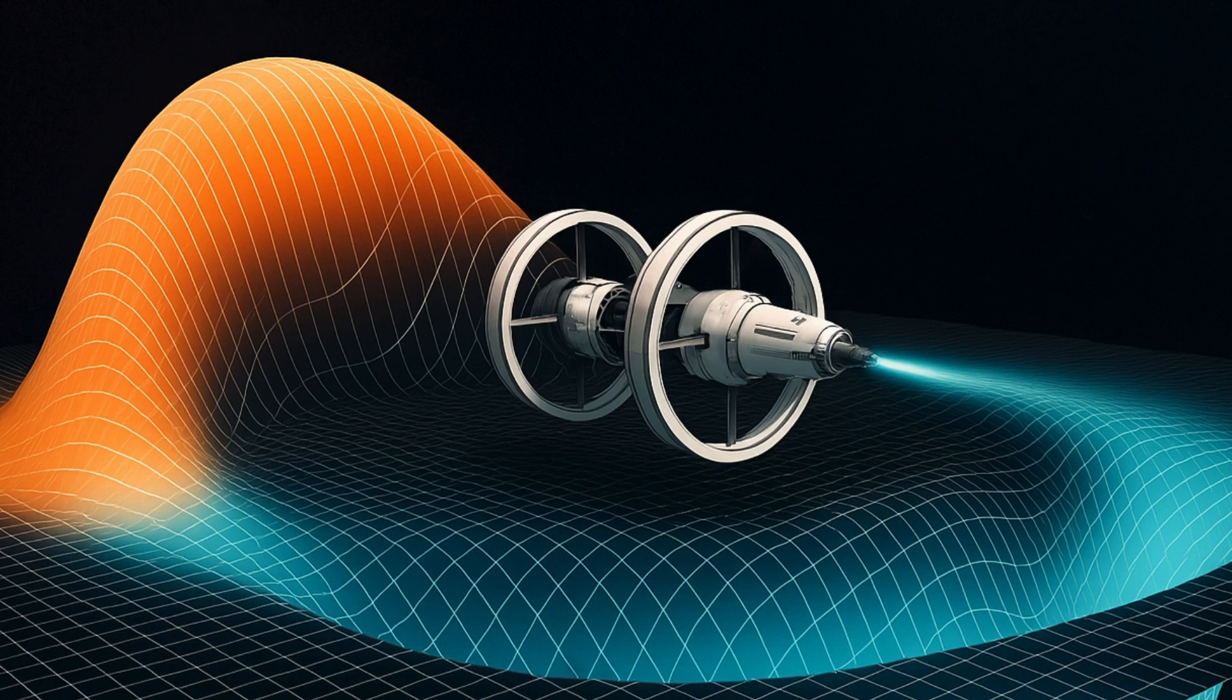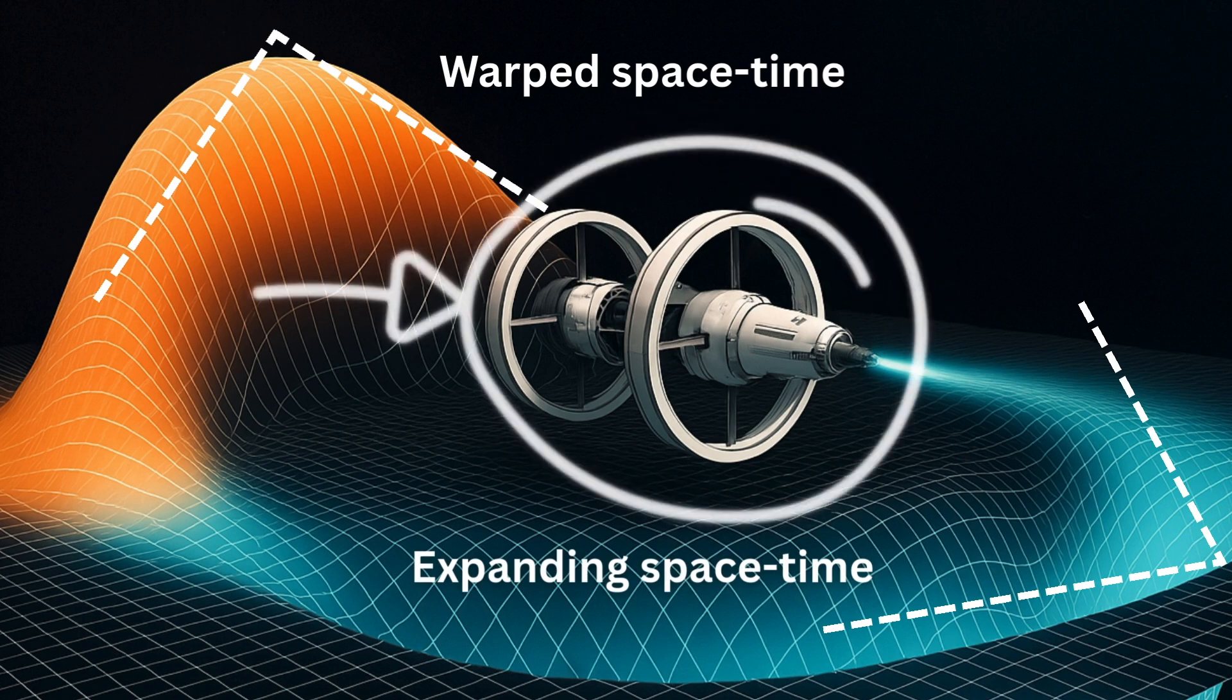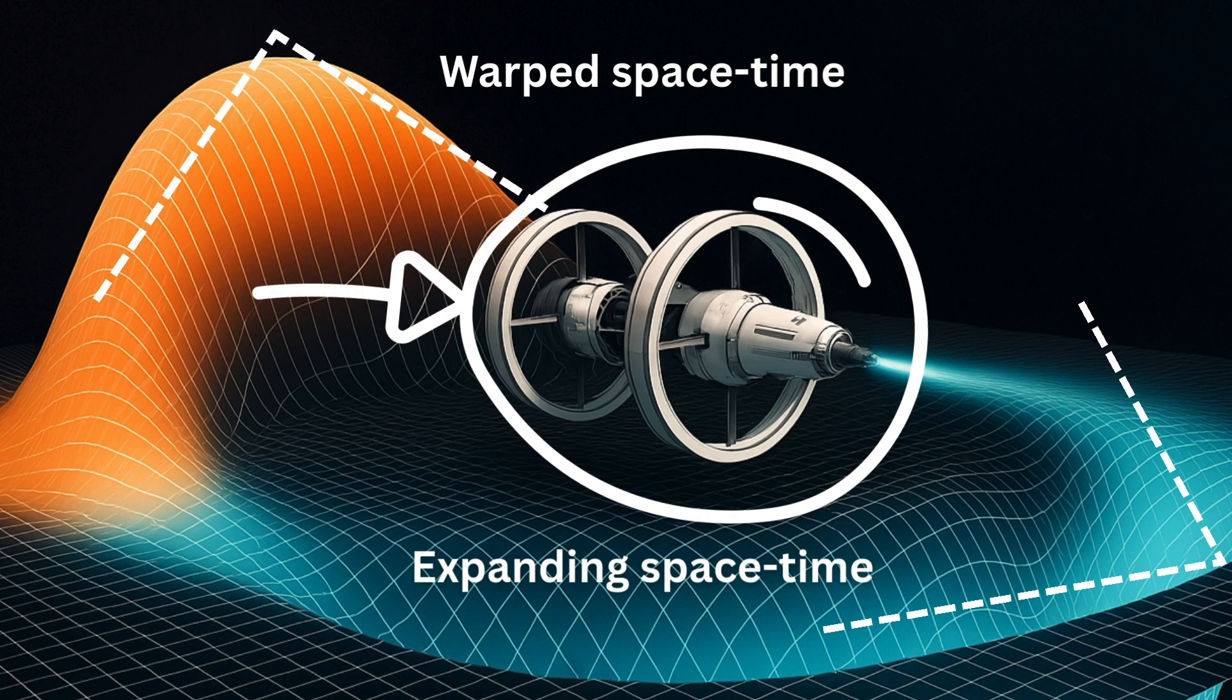A warp drive works by contracting space in front of the vessel and expanding space behind it. Between these two forces, the ship sits inside what's called a warp bubble, a region where space-time remains flat and stable. The ship itself does not accelerate. Instead, space moves, and the ship simply rides the current.